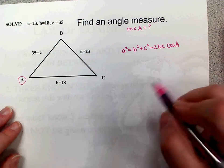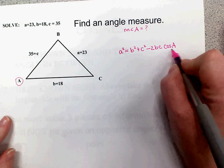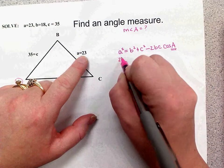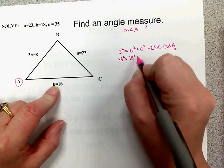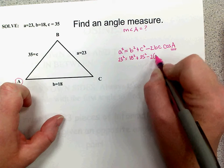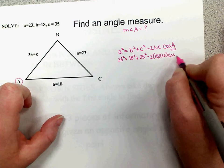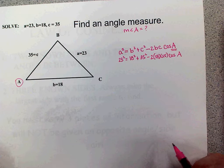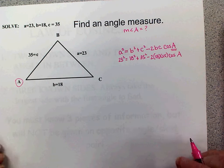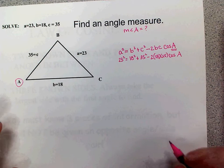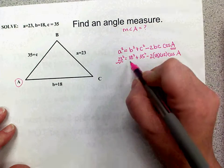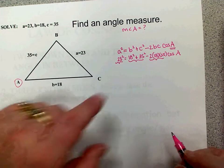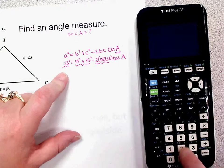We're solving for angle A and we know all three sides. Replace a with 23, b with 18, c with 35. So we have 23 squared equals 18 squared plus 35 squared minus two times 18 times 35 times cosine of A. To simplify, I'll break this into three parts and compute each piece separately in the calculator.